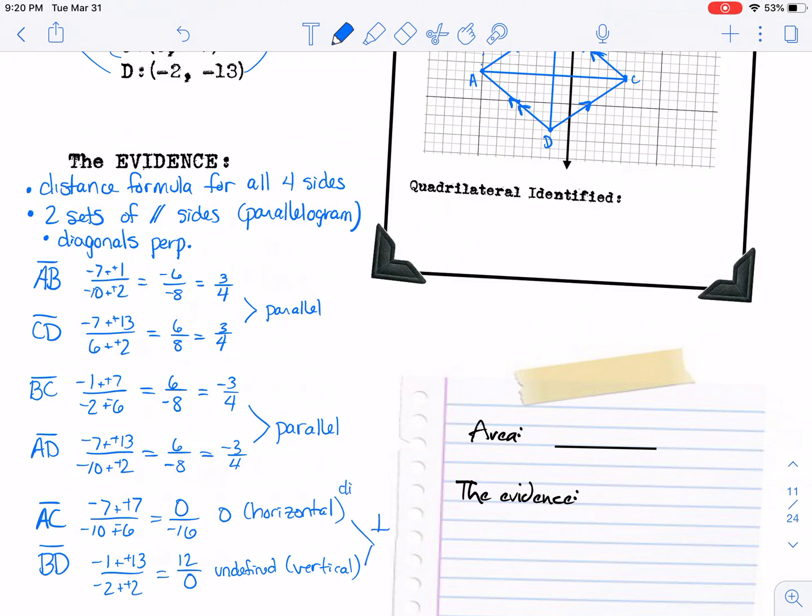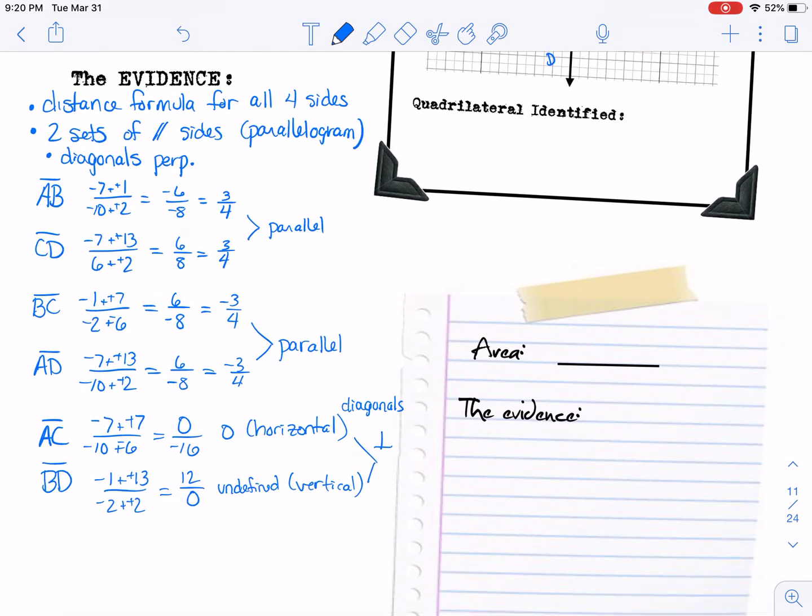But that means that these two are perpendicular. So the diagonals are perpendicular. So therefore, it's a rhombus.